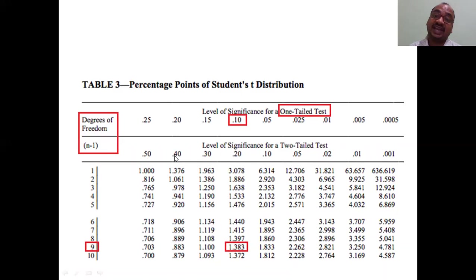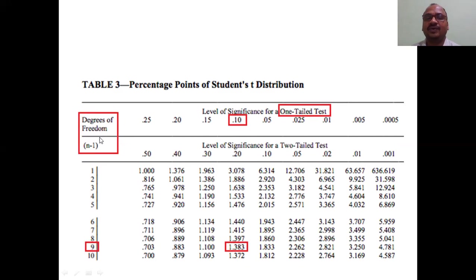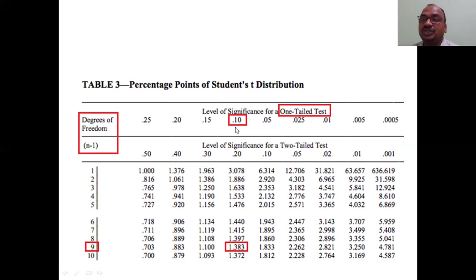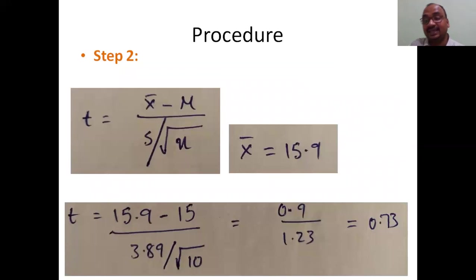From the standard table, degrees of freedom = n − 1 = 10 − 1 = 9. The level of significance alpha is 0.10. Since this is a one-tailed test (Type 2), at 9 degrees of freedom and alpha 0.10, the critical t-value from the table is 1.383.